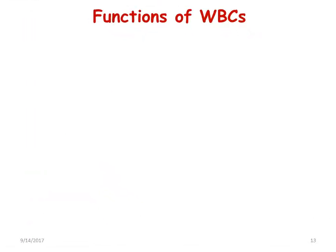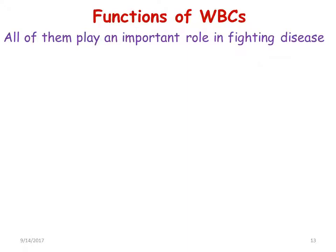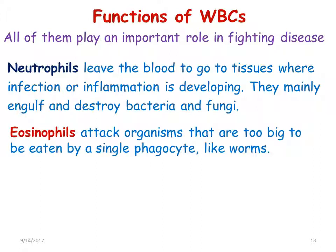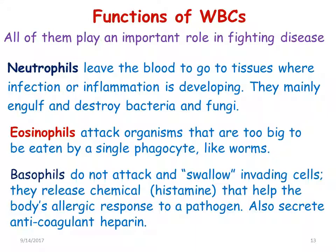The functions of white blood cells are important because in disease conditions these cell counts change. Neutrophils leave the blood to go to tissues where infection or inflammation is developing; they mainly engulf and destroy bacteria and fungi. Eosinophils attack organisms too large to be eaten by a single phagocyte, such as intestinal worms. Basophils do not attack and swallow invading cells — instead they release histamine to help the body's allergic reaction to a pathogen, and they also secrete the anticoagulant heparin.